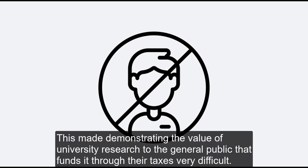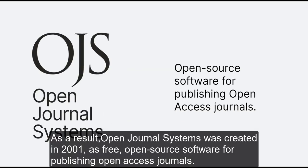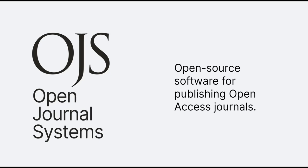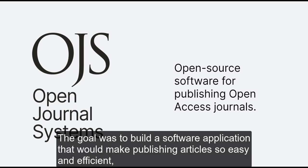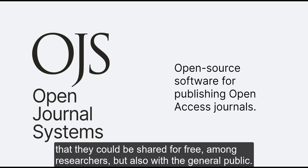This made demonstrating the value of university research to the general public that funds it with their taxes very difficult. As a result, Open Journal Systems was created in 2001 as free, open source software for publishing open access journals. The goal was to build a software application that would make publishing articles so easy and efficient that they could be shared for free among researchers, but also with the general public.